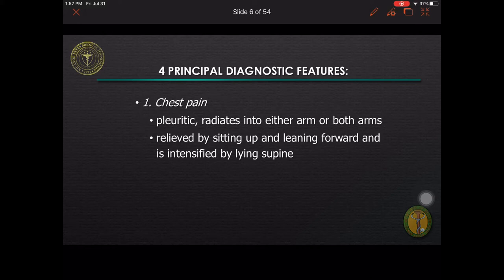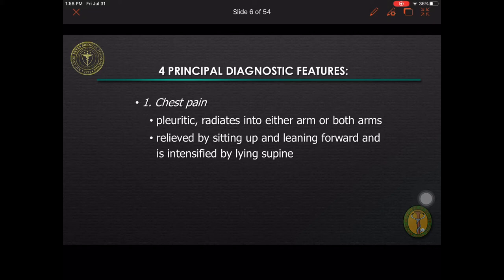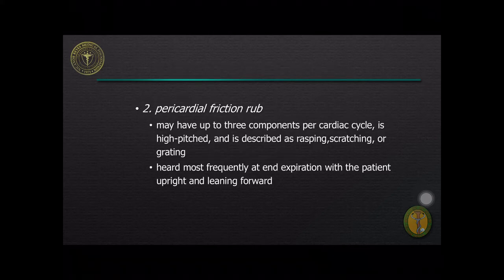The chest pain is relieved by sitting up and leaning forward and is intensified by lying supine. Sometimes the pain is steady and radiates through the trapezius ridge or either arms and resembles myocardial ischemia or infarction. Differentiation from acute myocardial infarction is based on the typical character of pain and dissociation of extensive ST segment elevation with quite modest elevation of serum cardiac biomarkers.